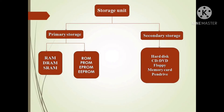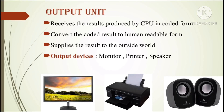Next is secondary storage, covering the basic structure we discussed. Moving on to output units: after data processing, the result is sent to the outside world through the output unit. It receives results from the CPU in coded form, converts them into human-readable format, and supplies them to the outside world. Important output devices include the monitor, speaker, and printer.